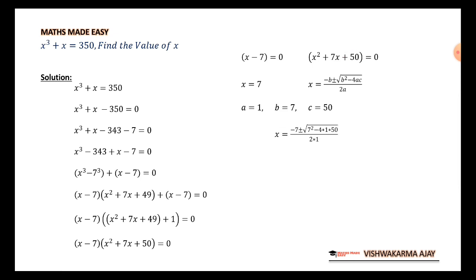Now, let's substitute the value of a, b, c over here. x is equal to minus 7 plus minus root of 7 square minus 4 times 1 times 50 upon 2 times 1. So, 7 square is 49 minus 4 times 50, that is 200. So, this is 200.